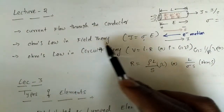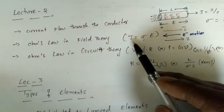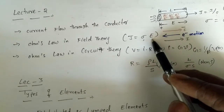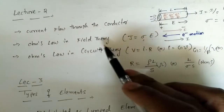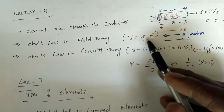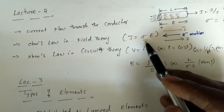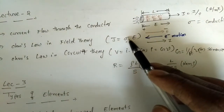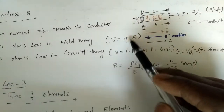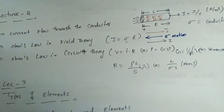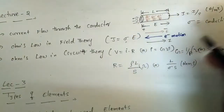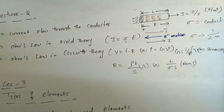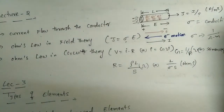We also discussed sigma, which is conductivity. This conductivity is a proportionality constant in Ohm's law in field theory — the current density is directly proportional to the applied electric field. We represent this as J = σE. Sigma should be constant and should not depend on temperature.